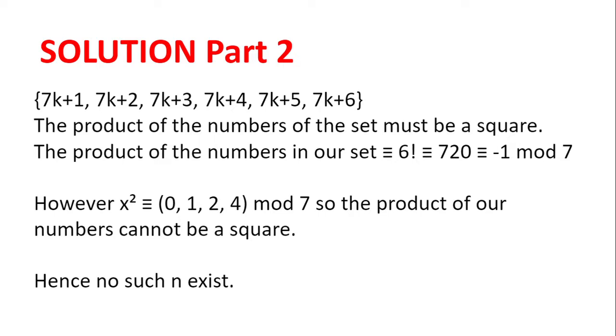However, if we look at the remainders when x² is divided by 7, we get 0, 1, 2, and 4.